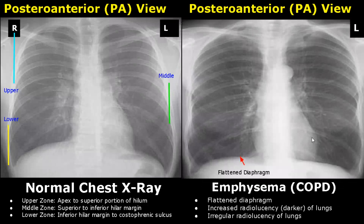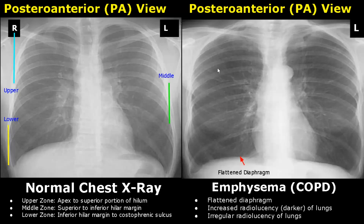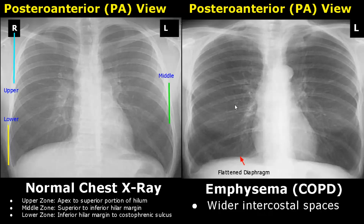Emphysema refers to abnormal permanent enlargement of air spaces. It is a component of COPD, which stands for chronic obstructive pulmonary disease — COPD patients suffer from chronic bronchitis and emphysema. On x-ray, the diaphragm will be flattened. The lungs are hyperinflated, making them appear darker than usual with increased and irregular radiolucency. We will also see wider intercostal spaces — the distance between the ribs has increased, which is another feature of emphysema.